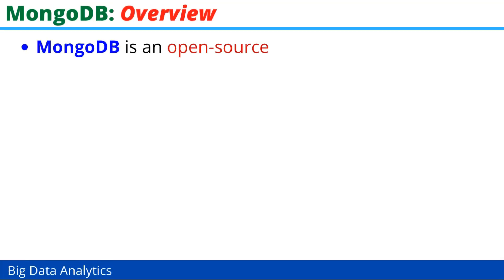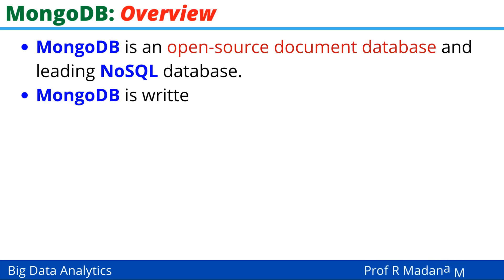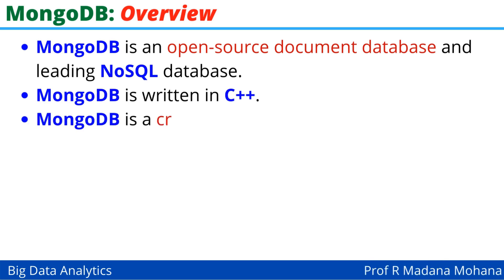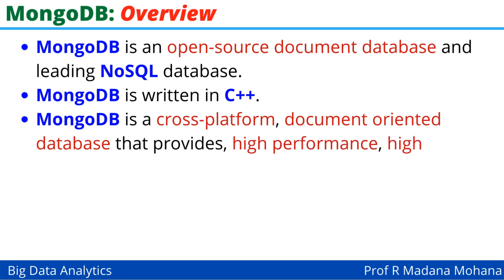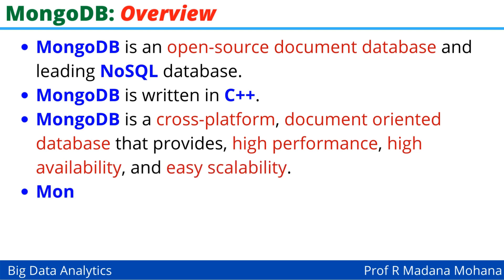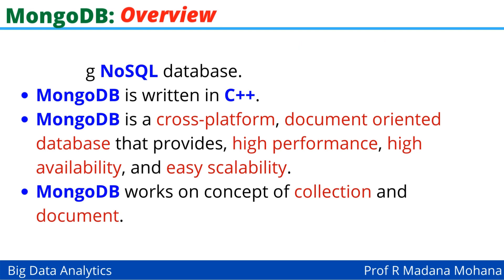MongoDB is an open source document database and a leading NoSQL database. It is written in C++. MongoDB is a cross-platform, document-oriented database which provides high performance, high availability, and easy scalability. MongoDB works on the concept of collection and document, so here we need to understand what a collection is and what a document is in MongoDB.